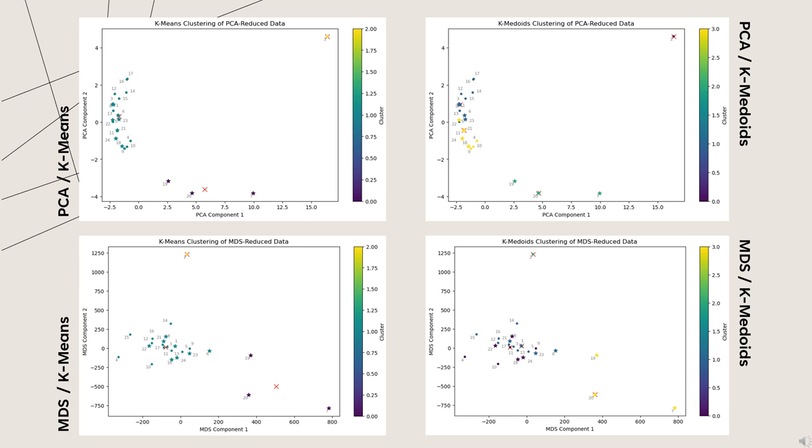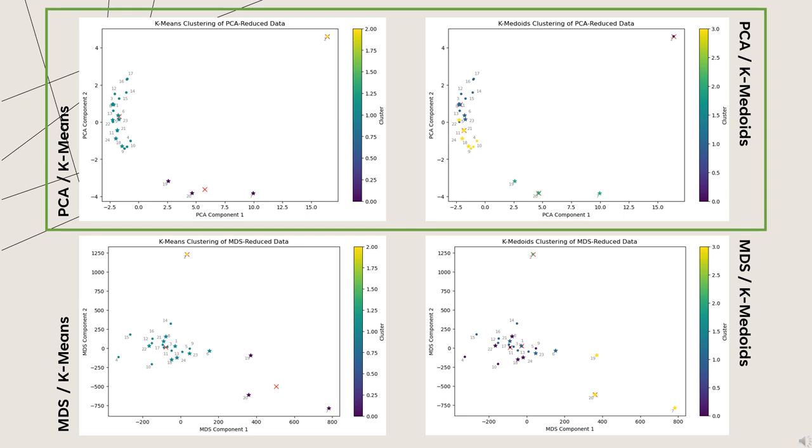As you can see in our outputs, there are three distinct K-means clusters and four distinct K-medoids clusters. While through PCA, each of our clusters were distinctly defined and consistent among our group members, there were inconsistencies through MDS. And throughout the three dimension reduction techniques and four clustering methods, we have determined that PCA works the best with our meteorite dataset.